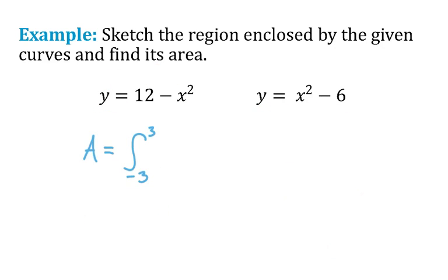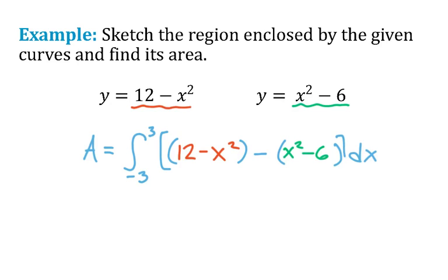Going back one more time to our screen, we'll be doing the upper function of 12 minus x squared. And this will be subtracted by the lower function of x squared minus 6. We have our upper minus our lower with respect to x. And I'm always a fan of cleaning up prior to integrating, just makes our life a little easier.